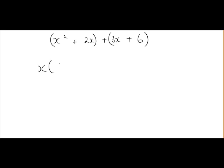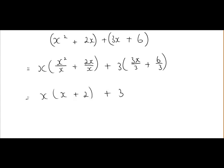We'll take x as a common factor here, divide x into both terms. 3 is the common factor here, so we'll divide 3 into both terms. So x squared divided by x is just x, 2x divided by x is 2, 3x divided by 3 is x, and 6 divided by 3 is 2.